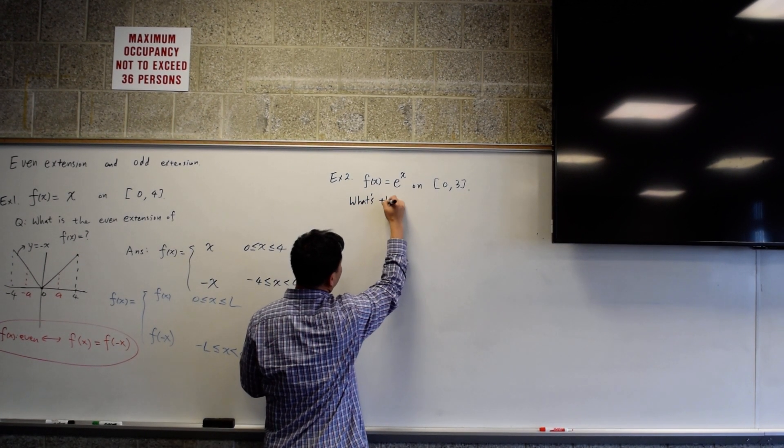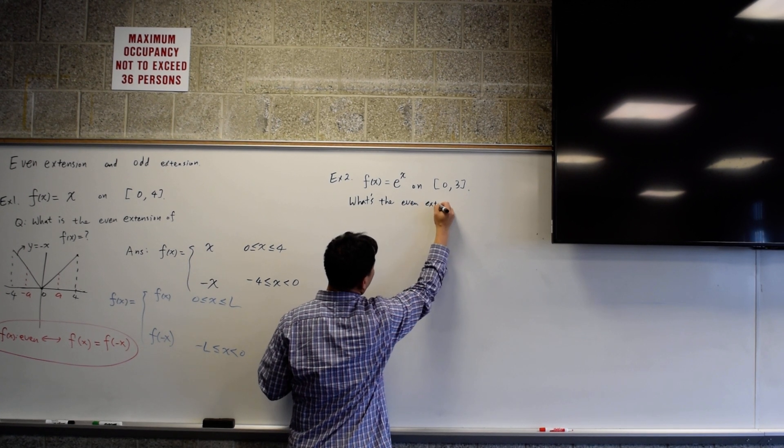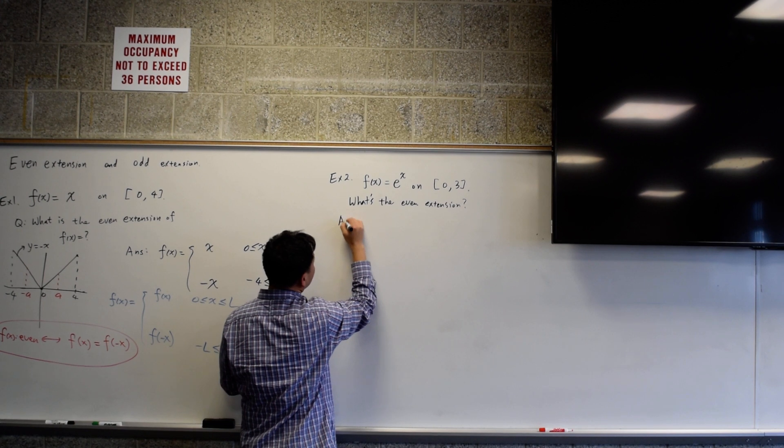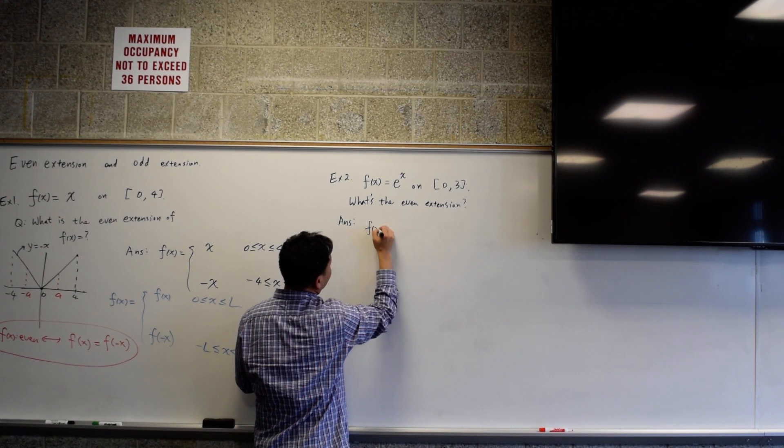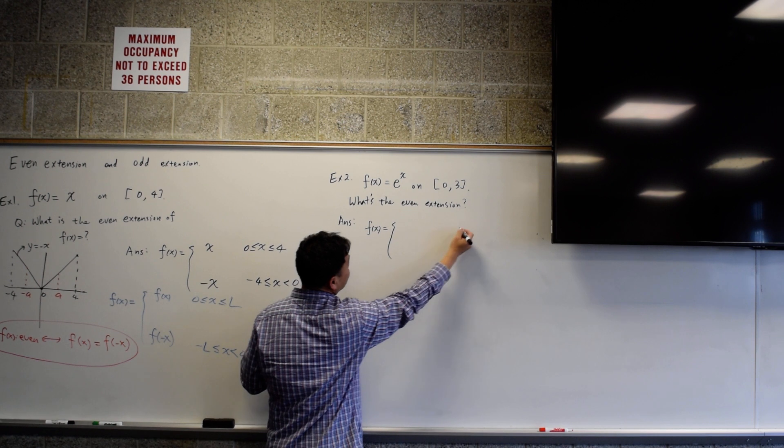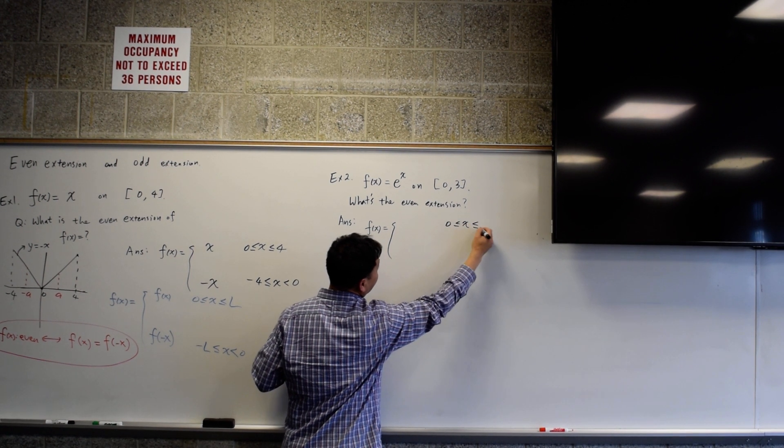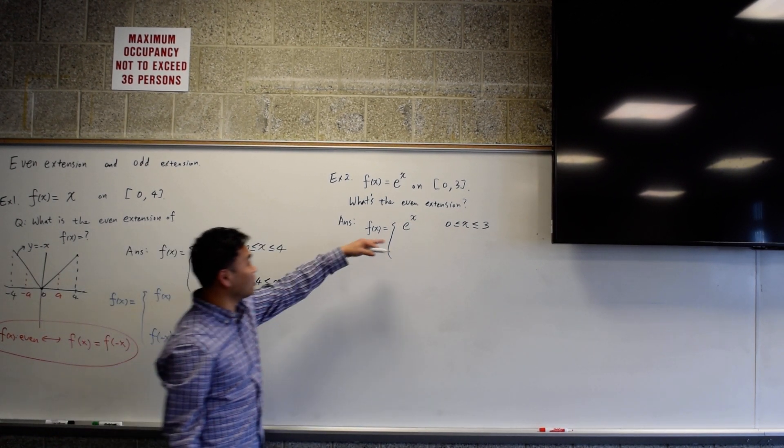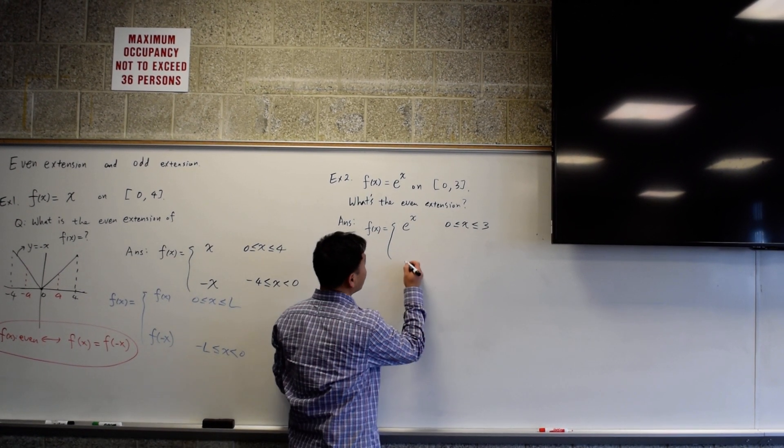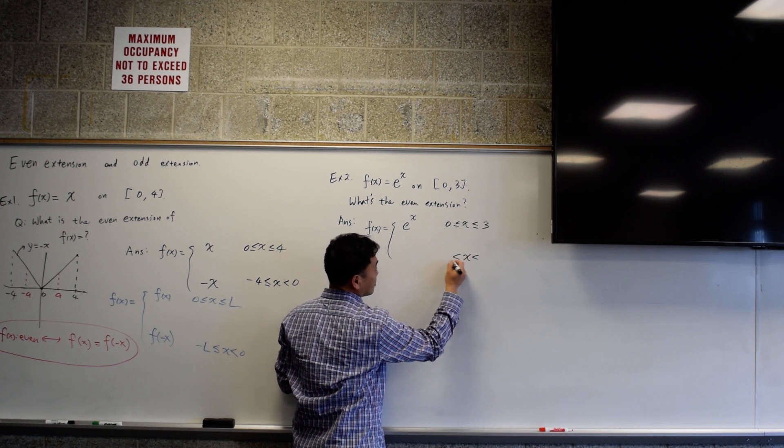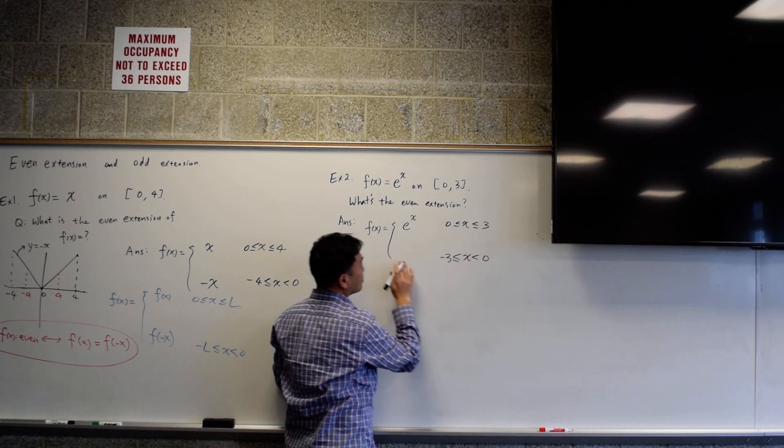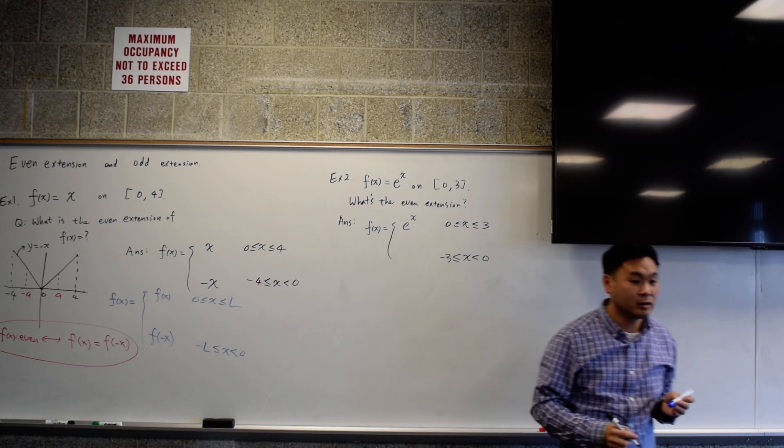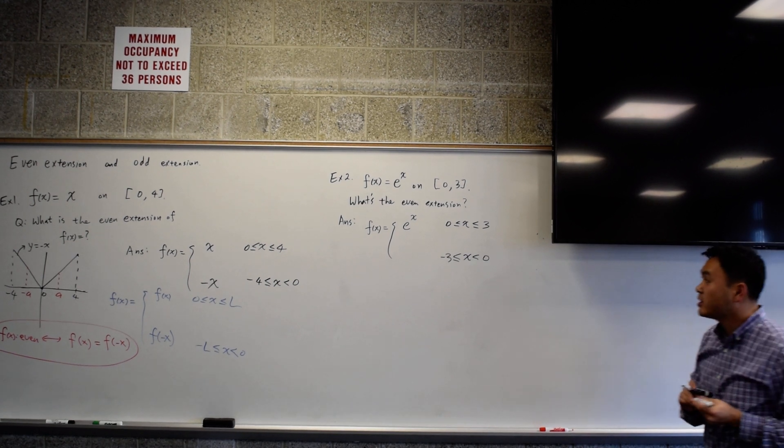What's the even extension? Then the answer is simply f of x is... When your x is positive, there's nothing to be done. It's the same as the original. But if x is negative, what would you do? What do you put here? What does this formula say? e to the negative x.